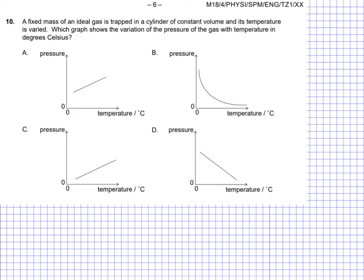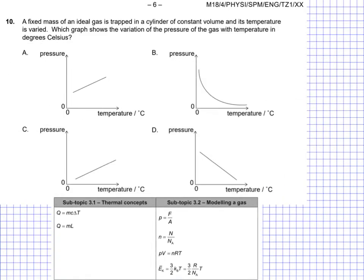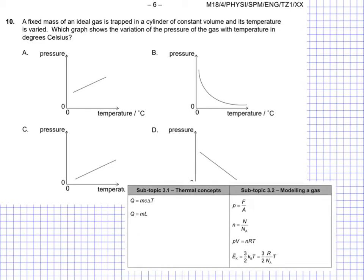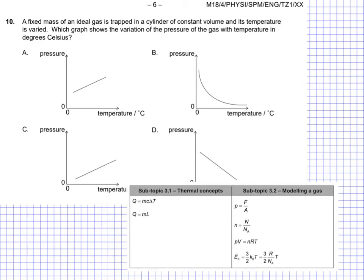Hello everyone and welcome to another IB past paper. This time we're on page 6 and it's the May 2018 standard level paper 1. So question 10, it's a fixed mass with an ideal gas trapped in a cylinder of constant volume. So we're into thermal physics. For this we're going to need to think about from our data sheet some of the formulas from unit 3, thermal physics.